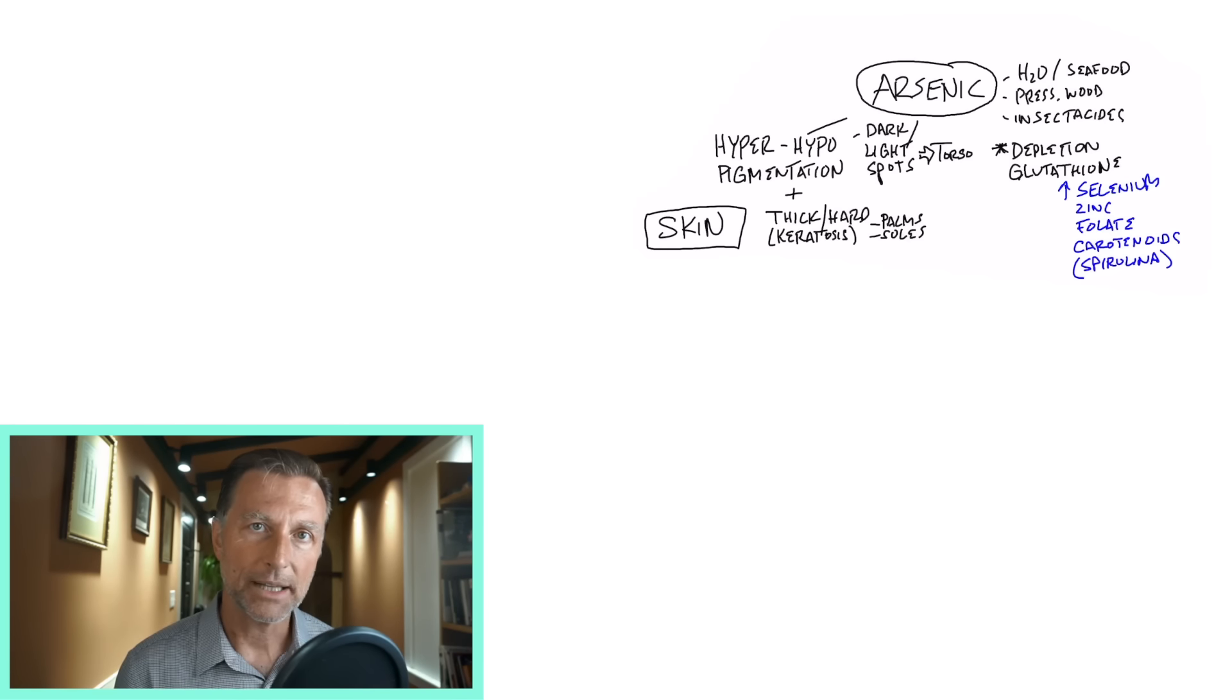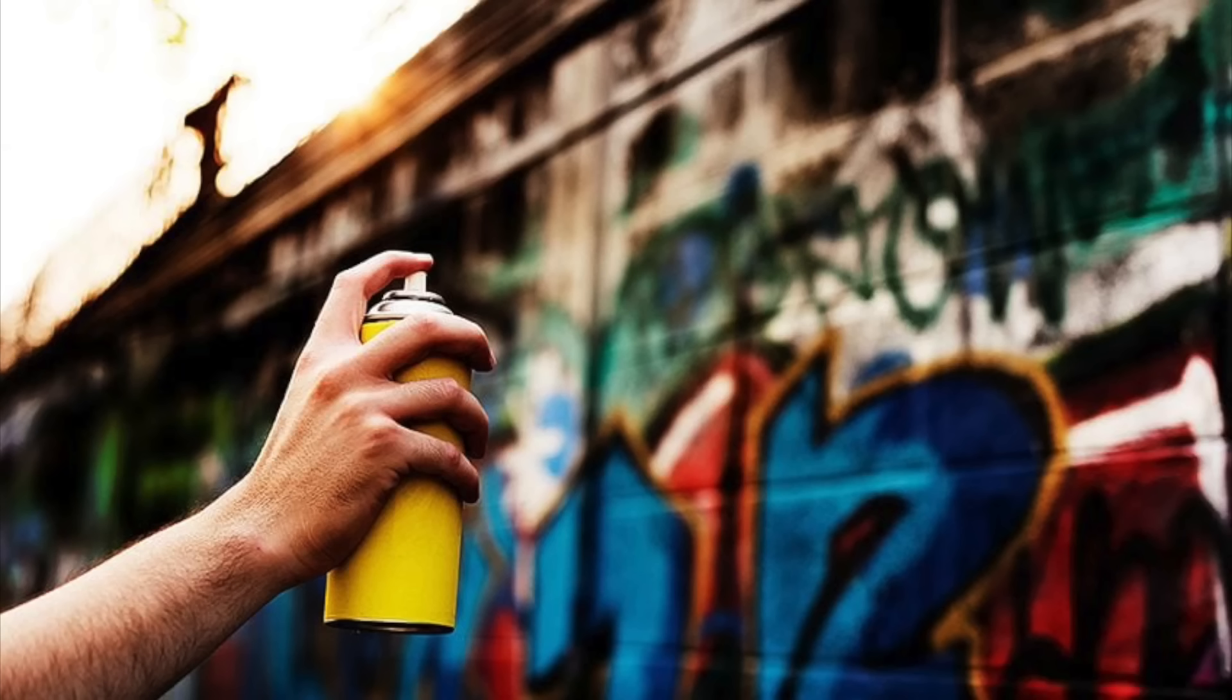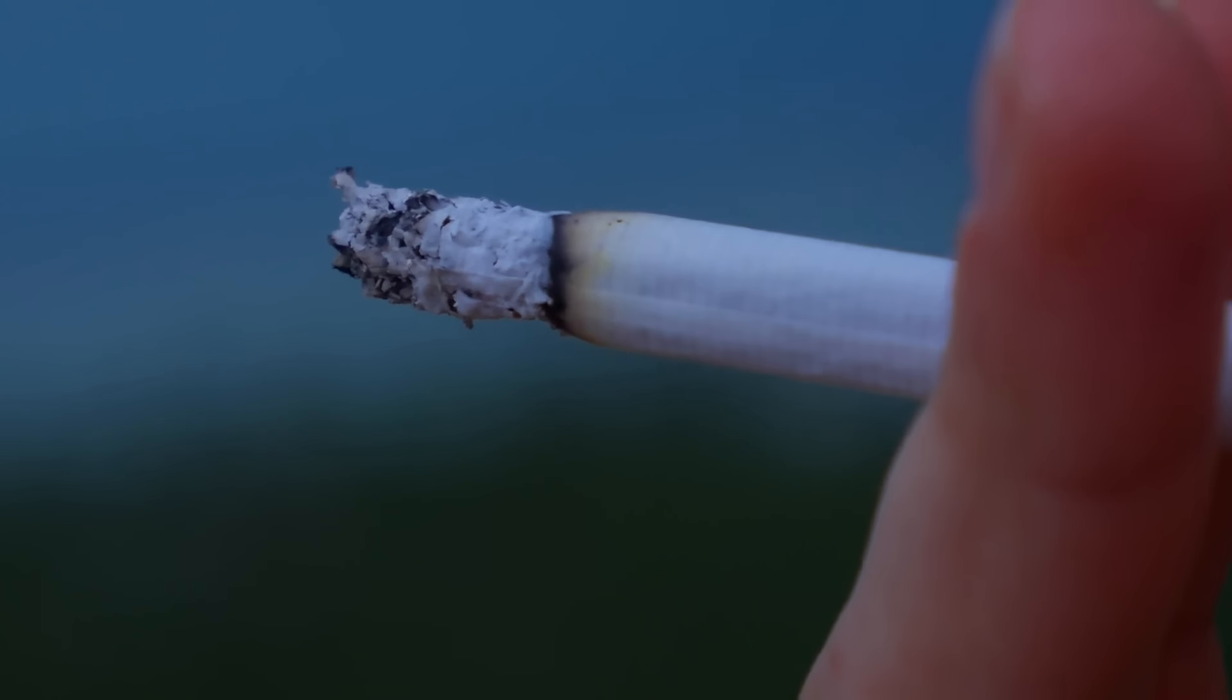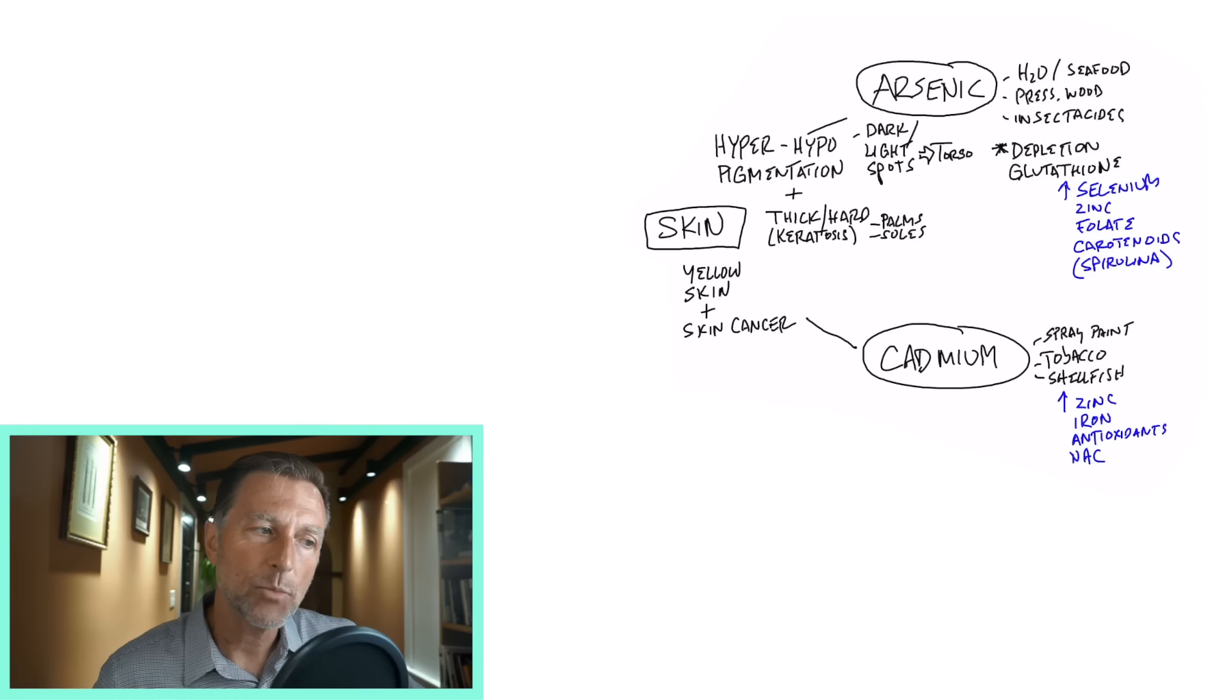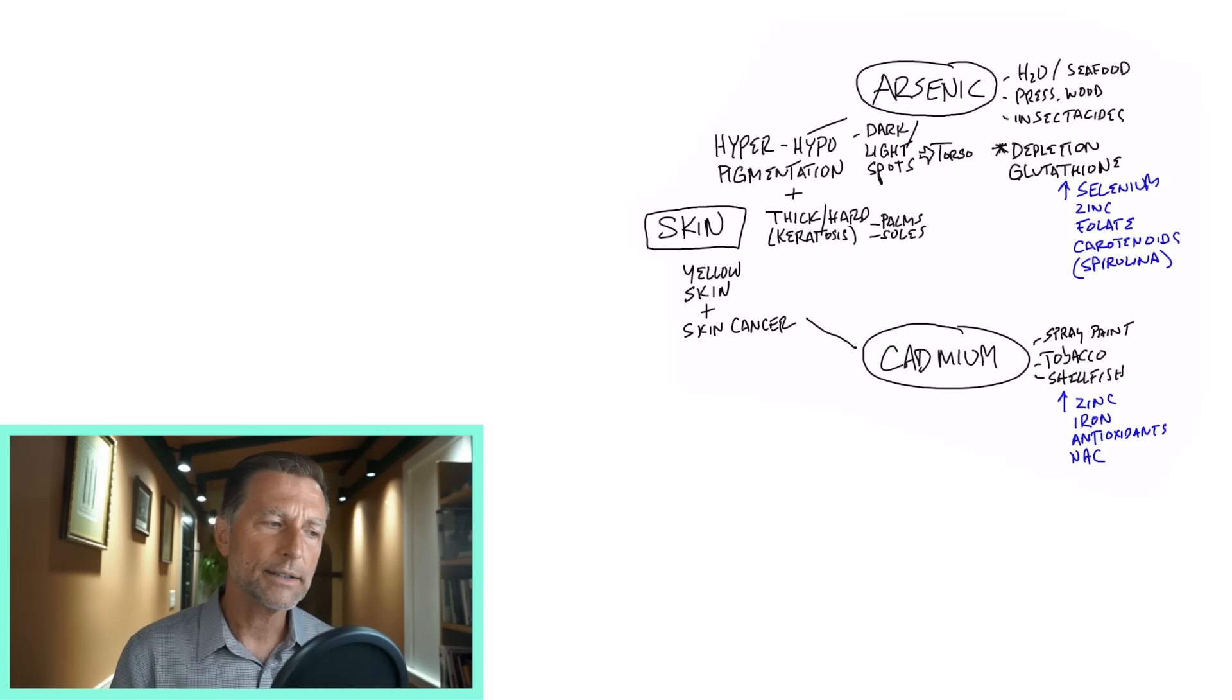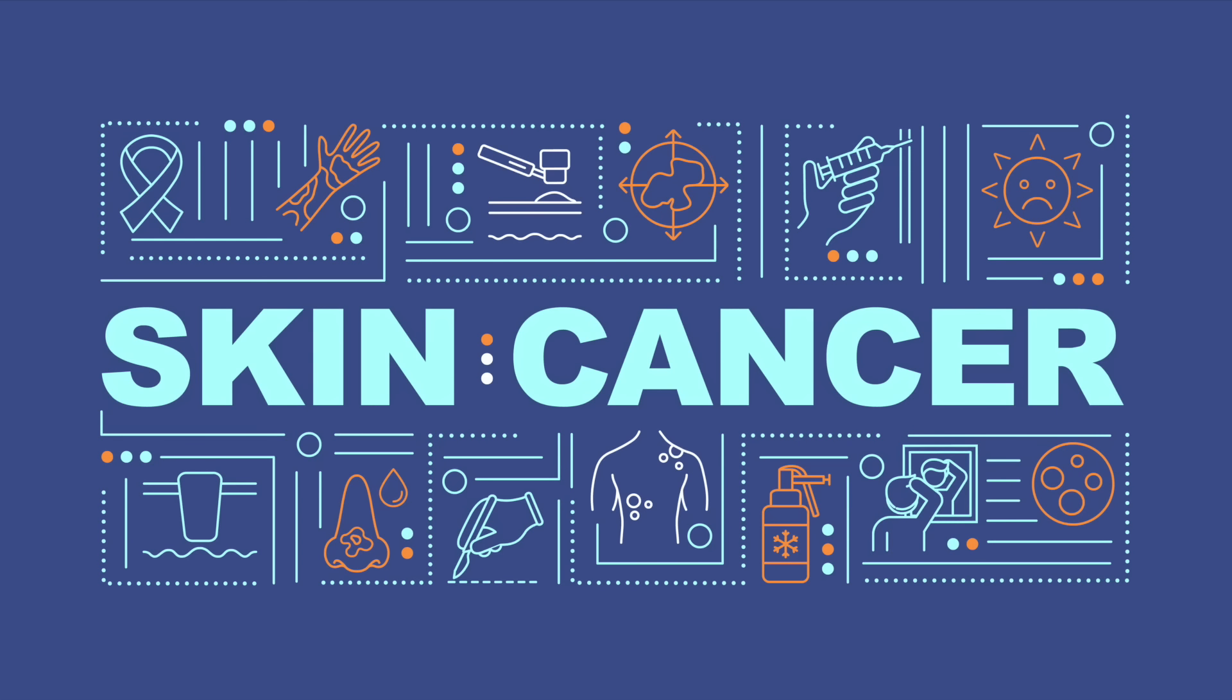Now the next one I want to talk about is cadmium. Cadmium is in spray paints, tobacco if you smoke cigarettes, and it's also in shellfish. If someone is exposed to too much cadmium, they're going to notice a yellowing of the skin - and this is not jaundice - and sometimes a tanning of your skin when you actually have no reason to be tanned. You're also susceptible to getting skin cancer if you have too much cadmium.